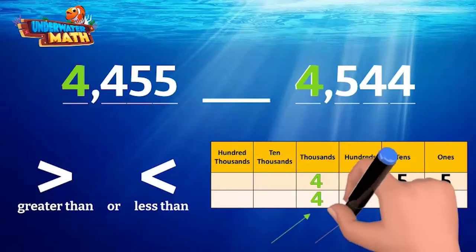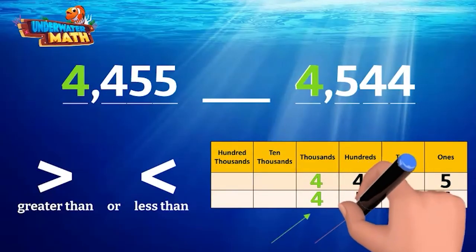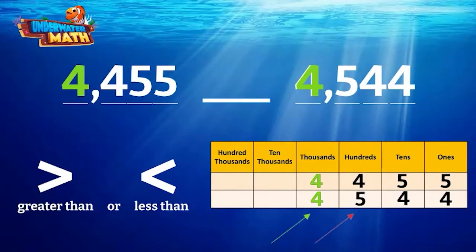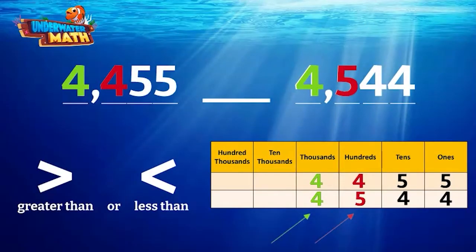So let's look at the digits in the hundreds place, since this is the next highest value. Here we can see that the second number has a five in the hundreds place and has a higher value than the four in the hundreds place for our first number. So this means our first number is less than our second number.